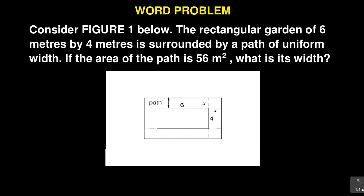For example, consider figure one — the diagram below. It says a rectangular garden is six meters by four meters. You can see the six and the four shown in the diagram. It says it is surrounded by a path of uniform width. The area of the path is 56 square meters. The question is: what is the width of this path?